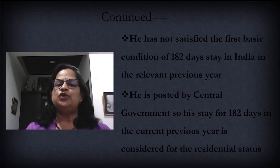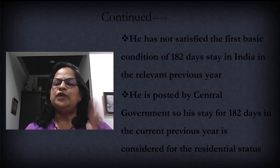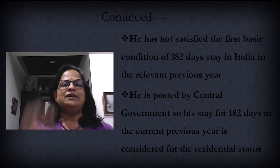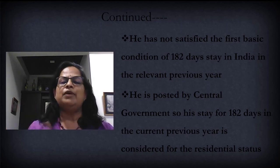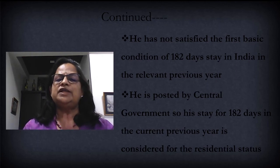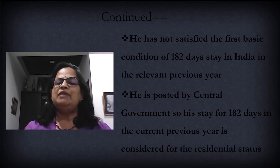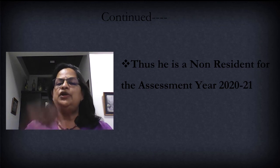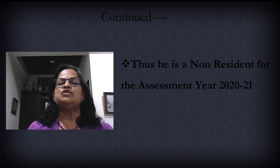When I was reading the question I told you he will get the exemption because he is an employee posted by the central government. So his stay has to be 182 days in the current previous year to be considered a resident — the 60-day exemption does not apply to him. We saw in the theoretical part the cases where the 60-day rule applies: Indian crew on a ship, persons posted abroad, going out for employment. Here it is clearly mentioned he is posted in Africa by the central government, so he needs 182 days. His residential status is non-resident for assessment year 2021.